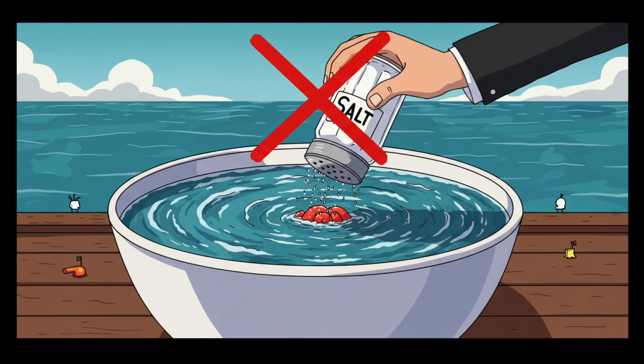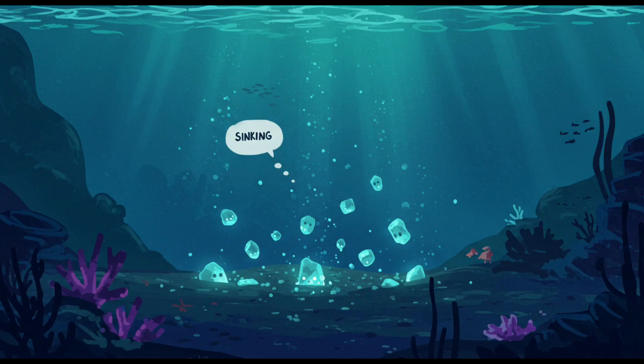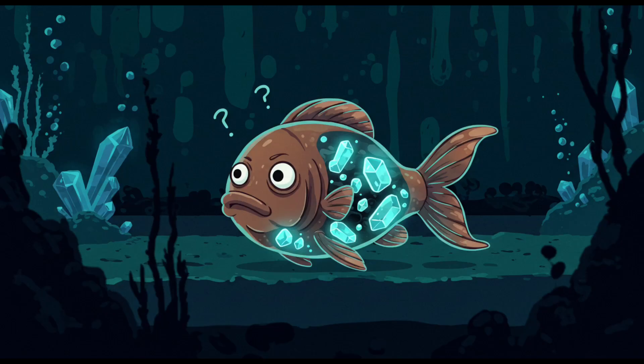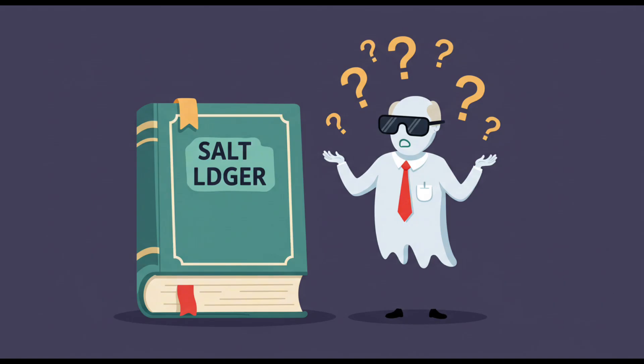Scientists know erosion plays a role, but the balance is messy. Oceans aren't just giant bowls of soup collecting salt, they're also constantly recycling it. Some minerals sink to the seafloor, others get trapped in living organisms, and still more get spit out by undersea volcanoes. The exact recipe of ocean saltiness has been stable for millions of years, but we can't fully explain why it doesn't just keep changing. It's like the planet has its own invisible salt accountant keeping the books balanced, and no one's figured out who's doing the math.